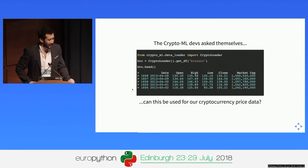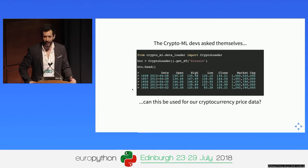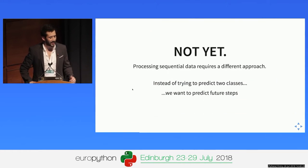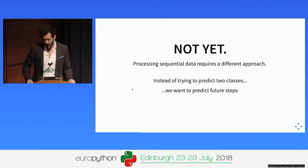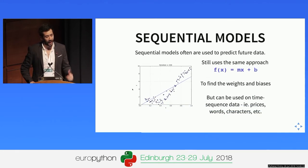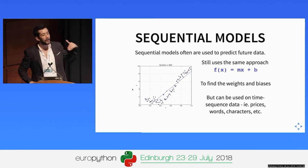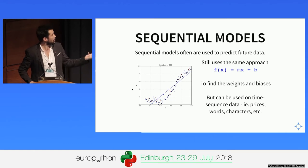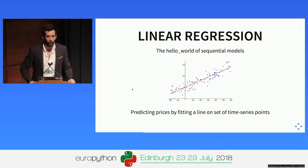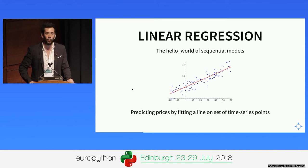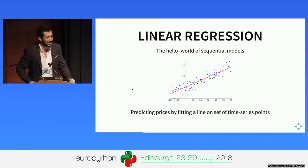The CryptoML devs asked themselves: can I use this for my time series data? The answer is not yet, because processing sequential data requires a different approach. This is where we introduce sequential models — basically models that try to predict a new time step based on the examples you've been given. The hello world of sequential models is linear regression, and this is what we would use to predict our cryptocurrency prices initially.